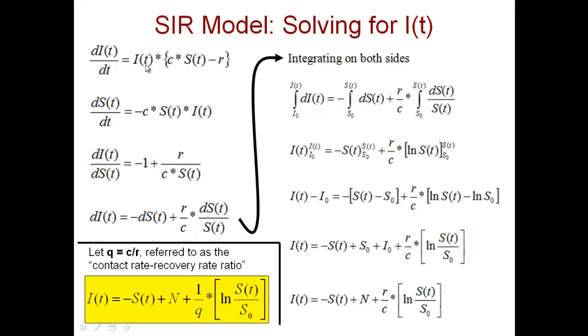So basically the first term is the same as this other than the negative sign. So it is going to be minus 1, then this minus divided by this minus is going to be plus r over c times S(t). The I(t) is a common term and cancels away.